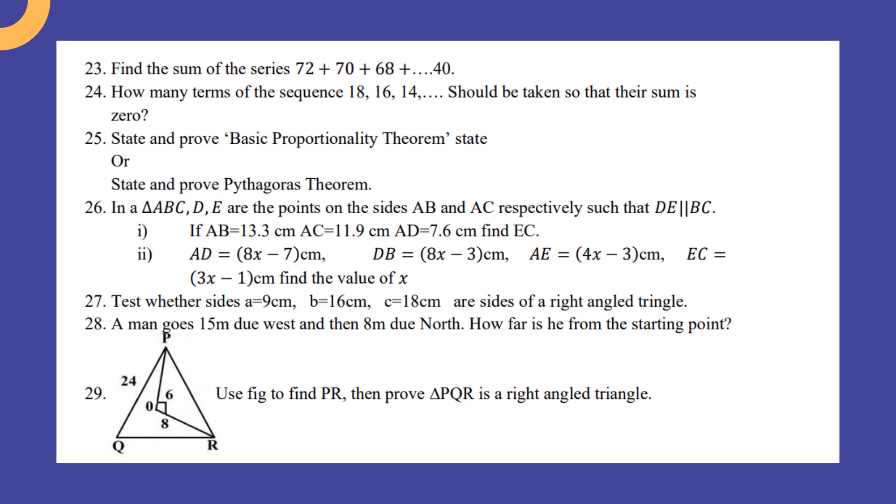In triangle ABC, D and E are the points on the sides AB and AC respectively such that DE is parallel to BC. If AB = 13.3 cm, AC = 11.9 cm, AD = 7.6 cm, find EC.